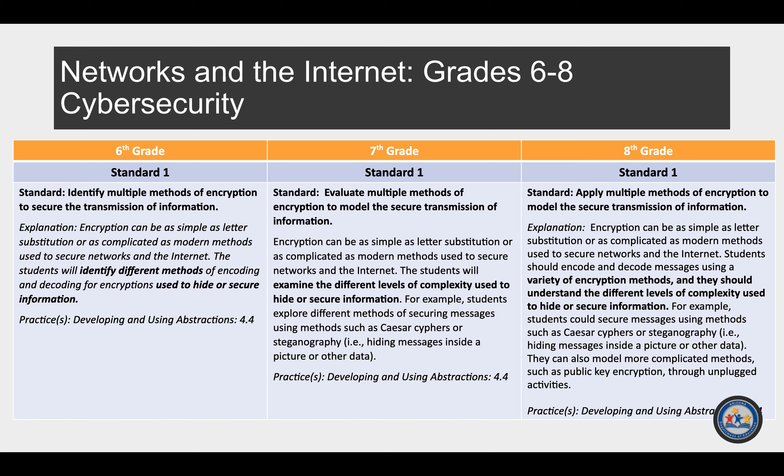This is an example of a middle school progression from sixth through eighth grade in cybersecurity. In sixth grade, students identify multiple methods of encryption to secure information, such as using strong passwords. In seventh grade, students evaluate multiple methods of encryption using different levels of complexity to hide or secure information. In eighth grade, students apply multiple methods of encryption to model the secure transmission of information, looking at different levels of complexity.